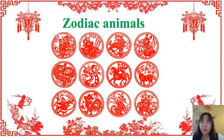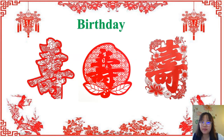This is a paper cutting of the zodiac animals — 十二生肖，the twelve animals，十二个动物。This character is 寿，which means to live a long time. 寿 is for birthdays — 生日 — especially for old people. 特别是老人。